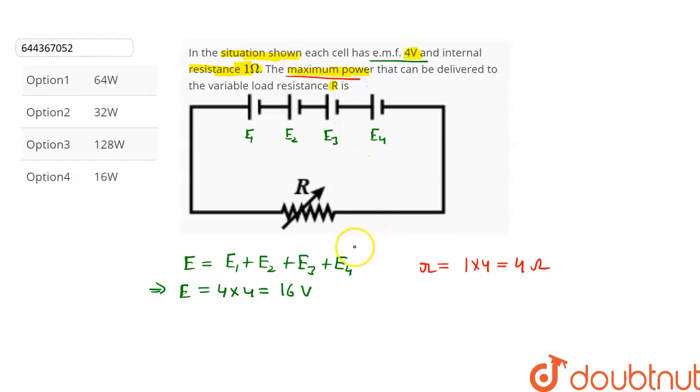We have to find the maximum power that can be delivered to the variable load resistance, and the maximum power P is given by E² upon R, where E is the EMF of the cell and R is the total resistance of the circuit.